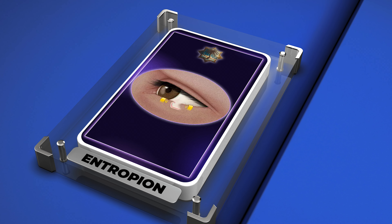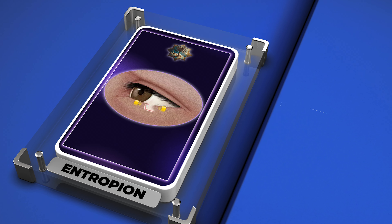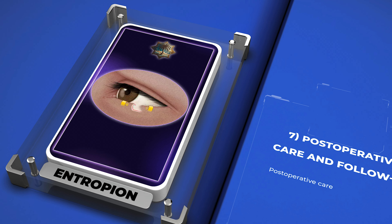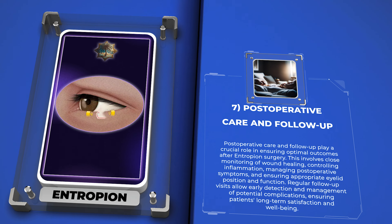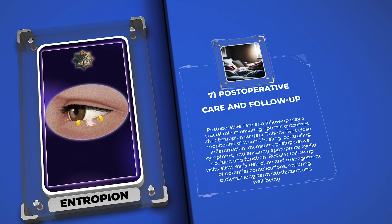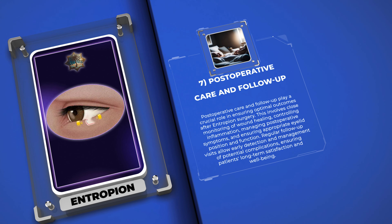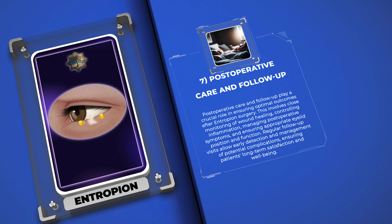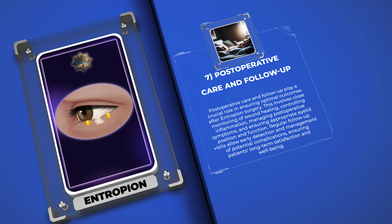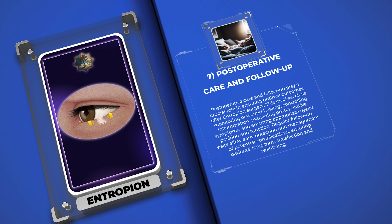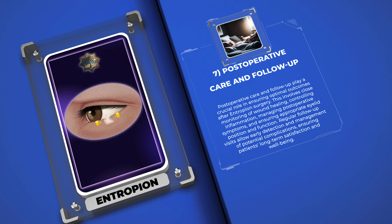Postoperative care and follow-up play a crucial role in ensuring optimal outcomes after entropion surgery. This involves close monitoring of wound healing, controlling inflammation, managing postoperative symptoms, and ensuring appropriate eyelid position and function. Regular follow-up visits allow early detection and management of potential complications, ensuring the patient's long-term satisfaction and well-being.